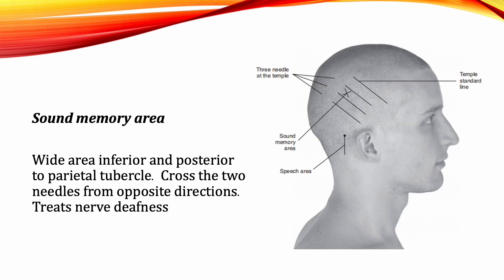Sound Memory Area: This is a wide area that is inferior and posterior to the parietal tubercle. Cross the two needles from opposite directions. This area is used to treat nerve deafness.